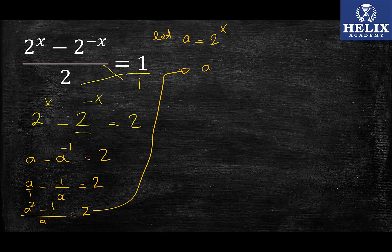I'm going to rewrite this here. I have a^2 - 1. So by cross multiplication, I will have a^2 - 1 times 1, which is just a^2 - 1, equals 2 times a, which is 2a.